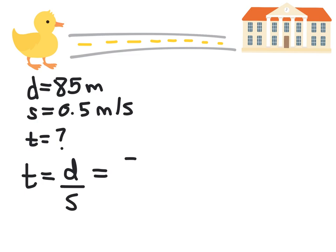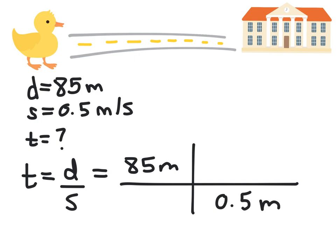Distance equals 85 meters, and I'm going to use a factor label method for this next step. We're dividing by 0.5 meters per second.